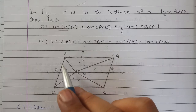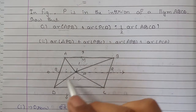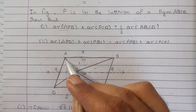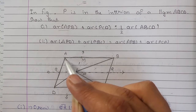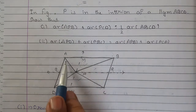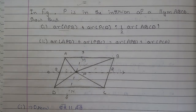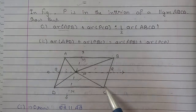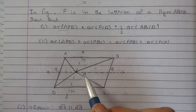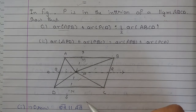Ab parallelogram AMND aur triangle APD dono ka base AD same hai, aur dono AD aur MN parallel lines ke beech mein hain. Matlab APD ka area AMND ke area se half hoga. Aur isi tarah se MBCN aur BPC — ye dono bhi same base BC aur parallel lines BC aur MN ke beech mein hain.